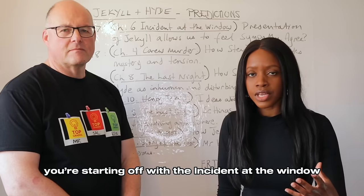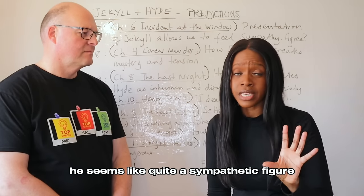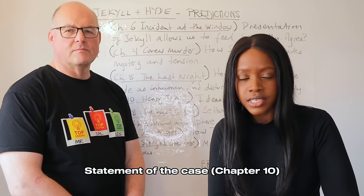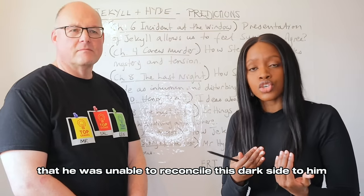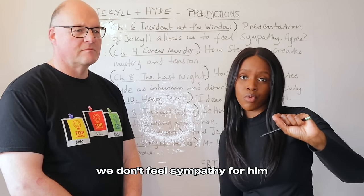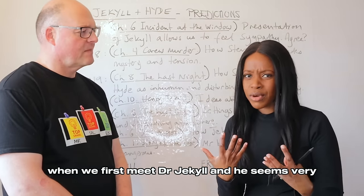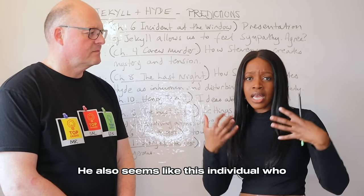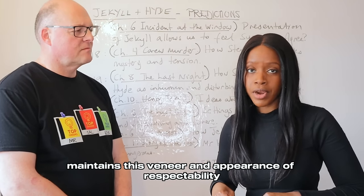For this question, you'd start with the incident in the window, where Jekyll is very withdrawn from society and seems like a sympathetic figure with an element of mystery. You'd also want to discuss chapter ten — Henry Jekyll's Statement of the Case — where he confesses his inability to reconcile his dark side. If you wanted to present a counter-argument, you could discuss chapter three, when we first meet Dr. Jekyll and he seems very reluctant to share details about Mr. Hyde, maintaining a veneer and appearance of respectability.